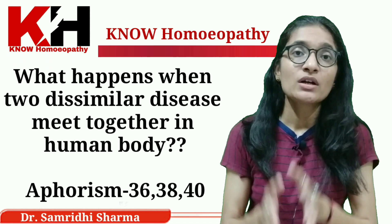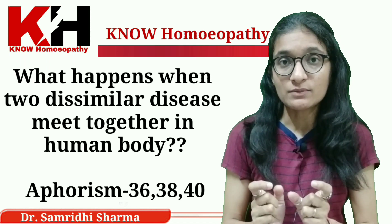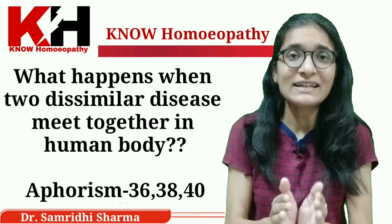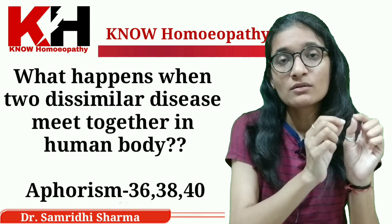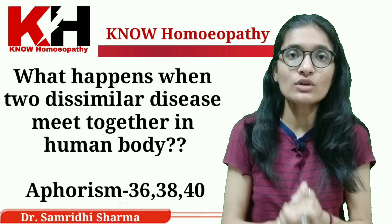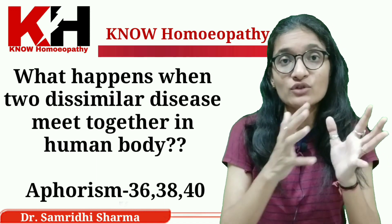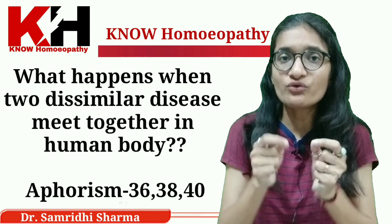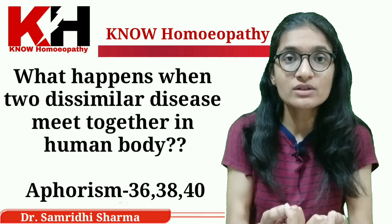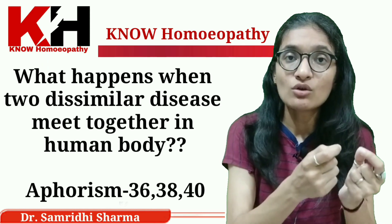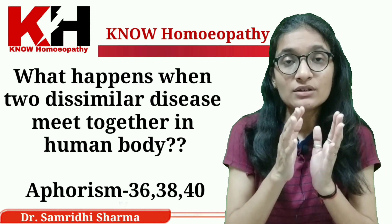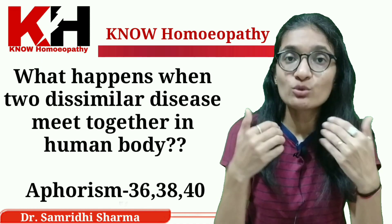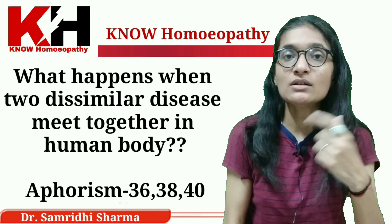The first possibility is that the new disease occurring in the body is weaker than the prevailing old disease. It is mentioned in Aphorism number 36 that if the new disease is weak or of equal strength to the old disease, the new disease is not going to appear in the body — it is going to be repelled by the old disease.